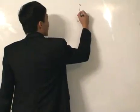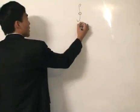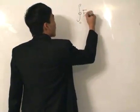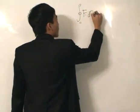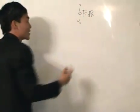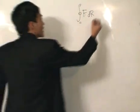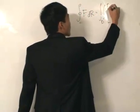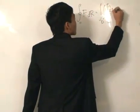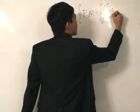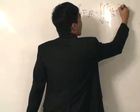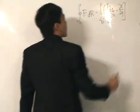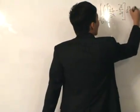So the closed line integral, or closed loop integral, of a certain vector function f with respect to dr, where r describes the closed loop C, is equal to the double integral over D of the first partial derivative of g with respect to x, take away the first partial derivative of f with respect to y, integrated over the area D.